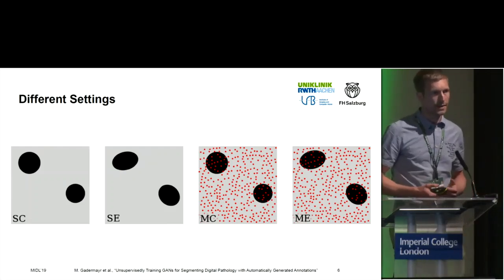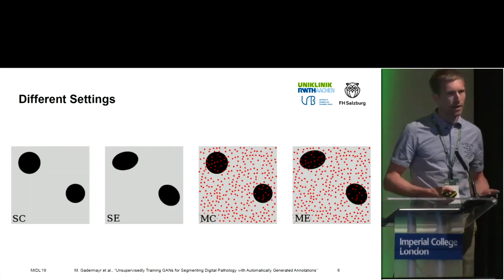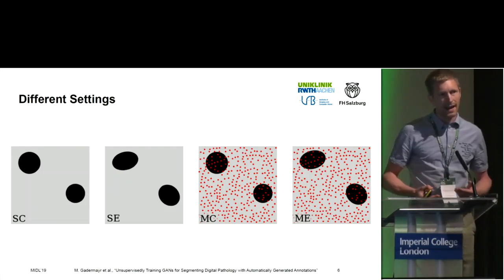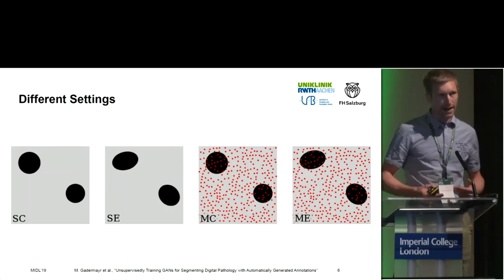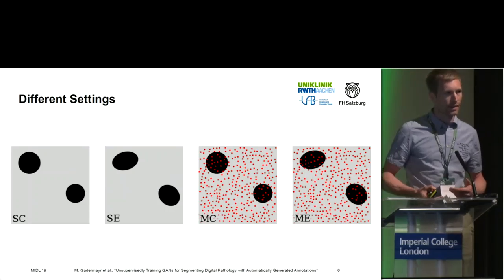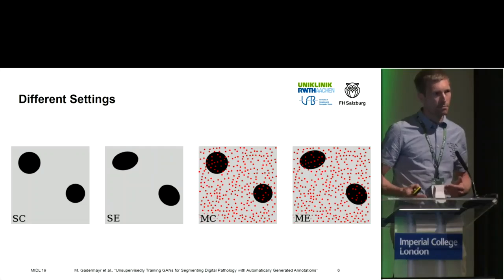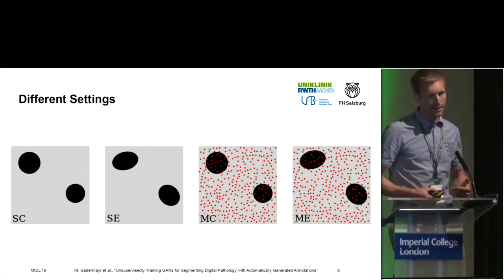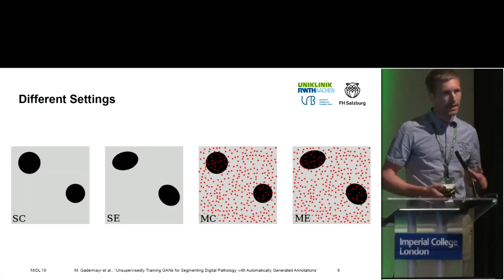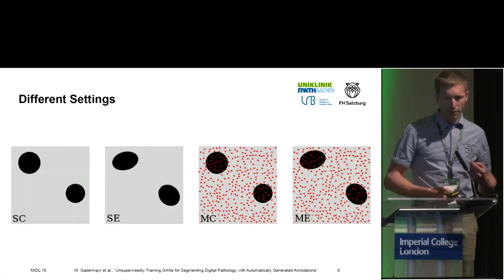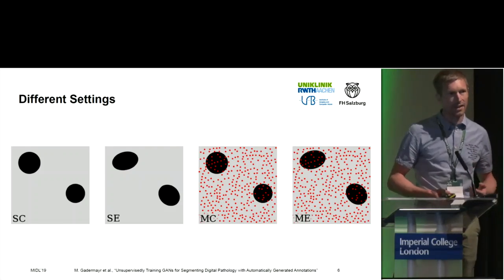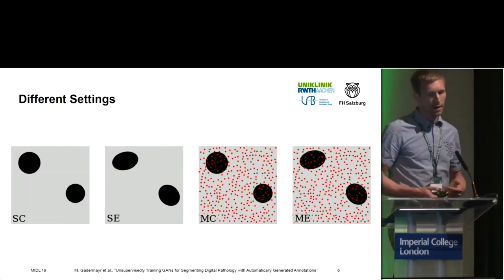We also tried the same with elliptic shapes, which is also quite easy. Then we thought maybe to train CycleGAN it's not so easy if we only have binary masks. As a speaker today already mentioned, we have this one-to-many mapping problem — we have a binary mask but we want to create an image out of it. For that purpose we made it a bit easier for CycleGAN and we introduced nuclei as well in our randomly generated masks.